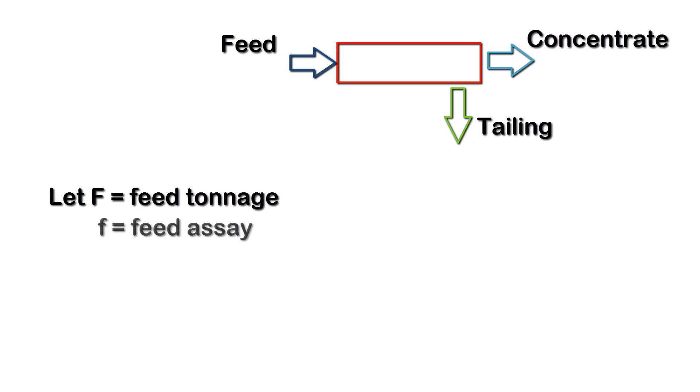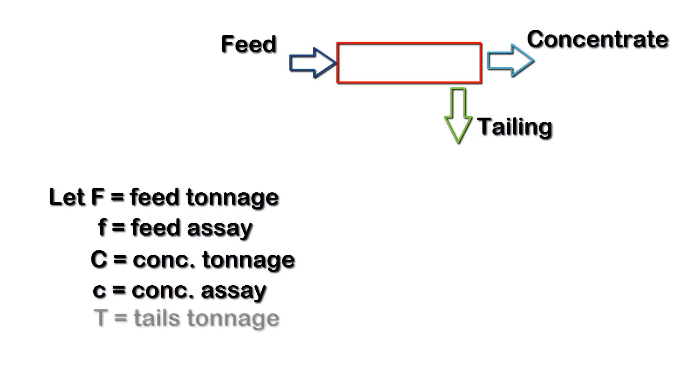Let F be the feed tonnage, small f be the feed assay, C be the concentrate tonnage, small c be the concentrate assay, T be the tailing tonnage, and small t be the tailing assay.